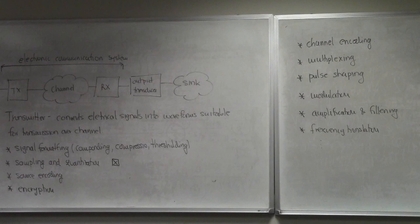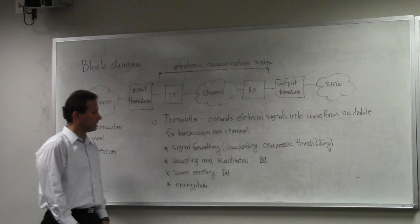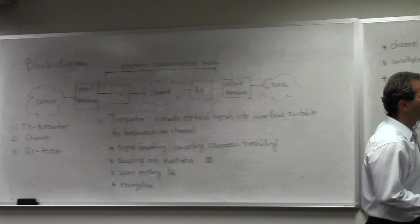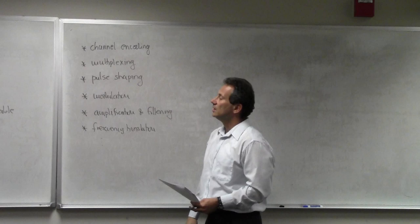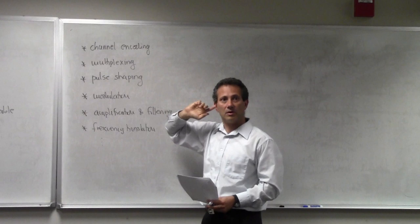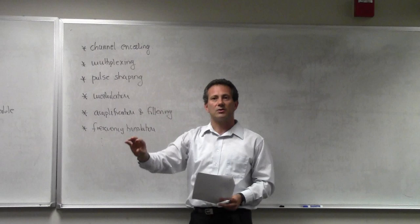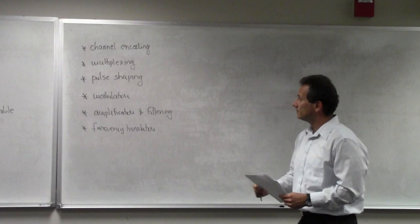We're going to talk about sampling and quantization in great detail — that's a good part and where we'll start. Then we'll talk about source encoding. Encryption is beyond the scope of this course. For channel coding, we have a separate course called error control coding, which covers how you add redundancy so the receiver can decode a particular stream of data. I'll mention it in a generic sense because we'll cover Shannon's encoding theorem and discuss channel encoding from an information theory perspective, but the actual techniques are left to a dedicated course.